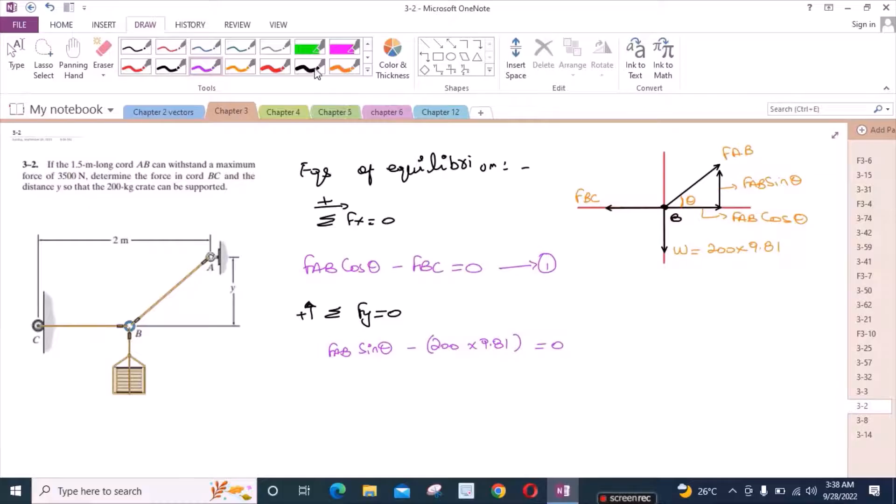And we have been given that FAB could be maximum up to 3500 Newtons. So FAB max could be 3500 Newtons. Now if we substitute FAB equals to 3500 Newtons, then from here theta is equal to 34.1 degrees.